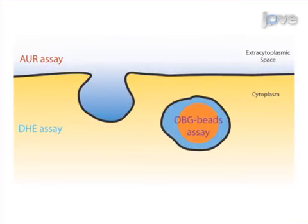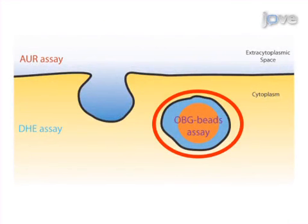This is achieved by performing three different assays, the first of which uses oxyburst green or OBG coated beads and live microscopy.